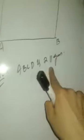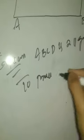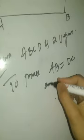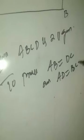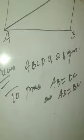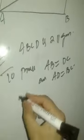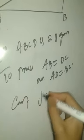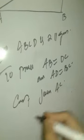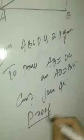To prove: AB equals DC and AD equals BC. Now for the proof we will do one thing — join AC. We can draw either diagonal BD or AC. Construction: join AC.